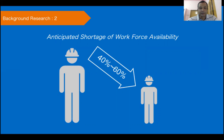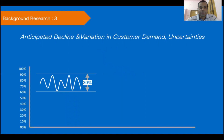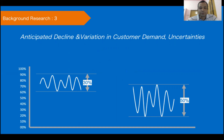The third research outcome will be a major pain point for all top managers: the anticipated decline and variation in customer demand. Before the pandemic, there was already a 50% variation in customer orders on a monthly, weekly, or daily basis. After the pandemic, this variation is expected to increase further, with an overall average drop of 40 to 60% in customer requirements — combining both increased variation and reduced quantity.